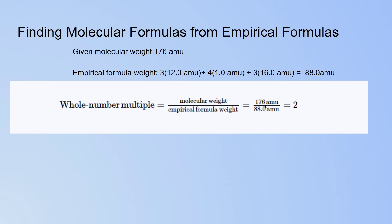In order to find the whole number multiple — how many times bigger your molecular weight is than your formula weight — take the molecular weight of 176 AMU and divide it by the empirical formula weight of 88.0 AMU. That gives you 2. So your molecular weight is 2 times bigger than your empirical formula weight, meaning you multiply your empirical formula by 2. C3H4O3 times 2 equals C6H8O6.